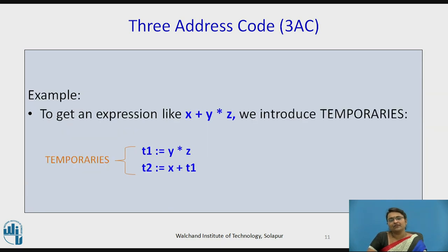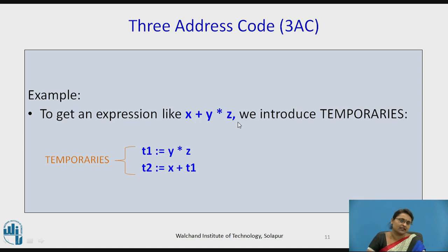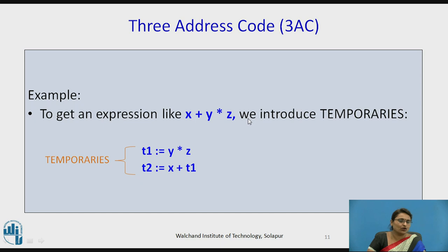Consider the example statement X plus Y multiplied by Z. The three-address code is generated according to the precedence of operations. The first operation executed is Y multiplied by Z, so a temporary variable T1 is created: T1 = Y * Z. Next, T2 = X + T1. This is the three-address code for X plus Y multiplied by Z, using two temporaries T1 and T2.